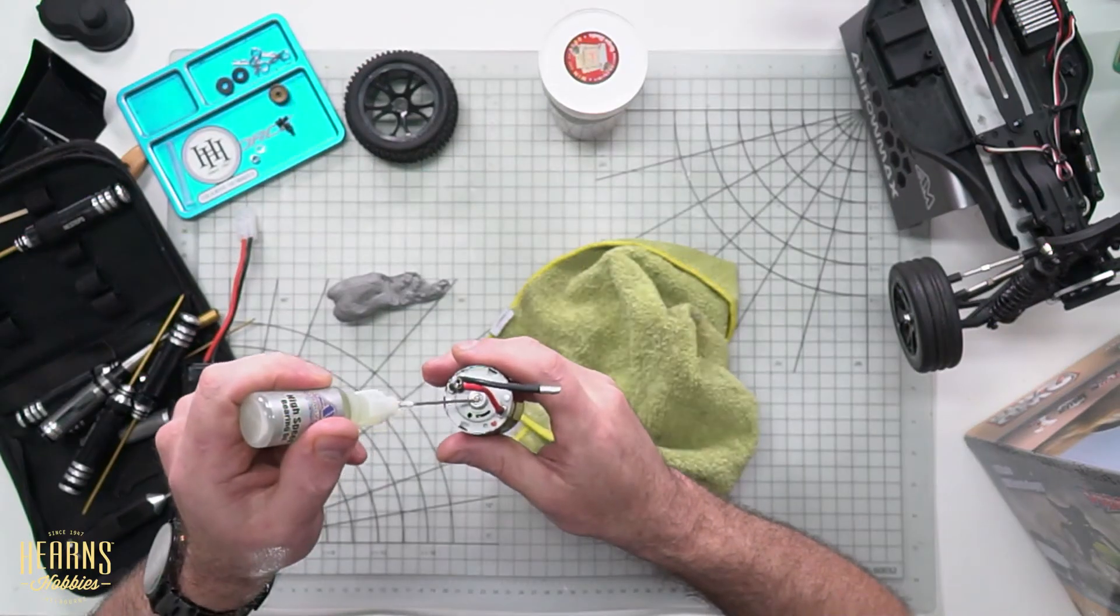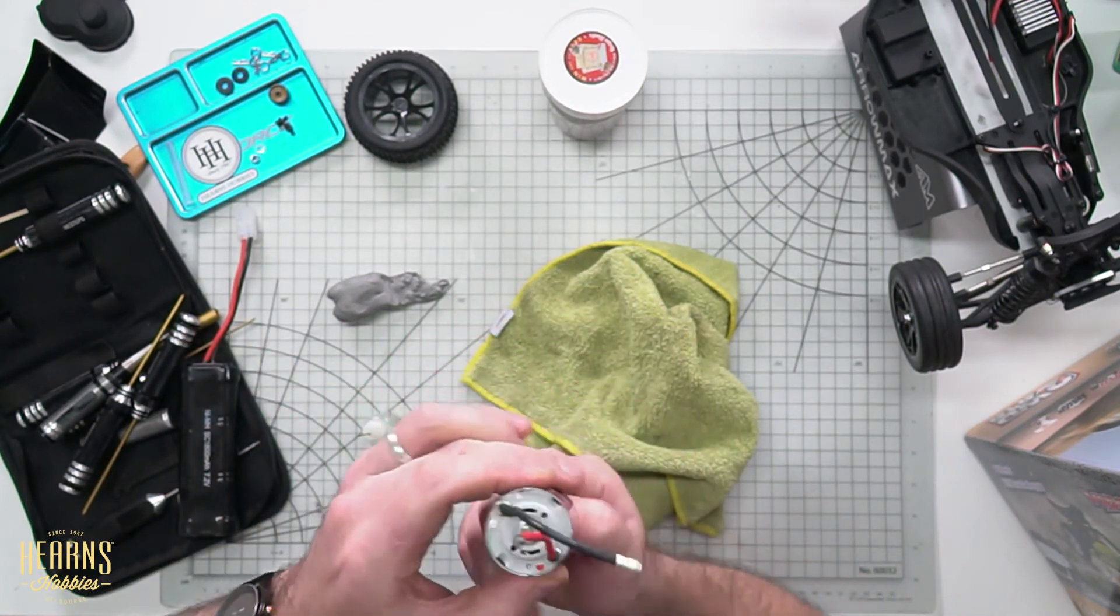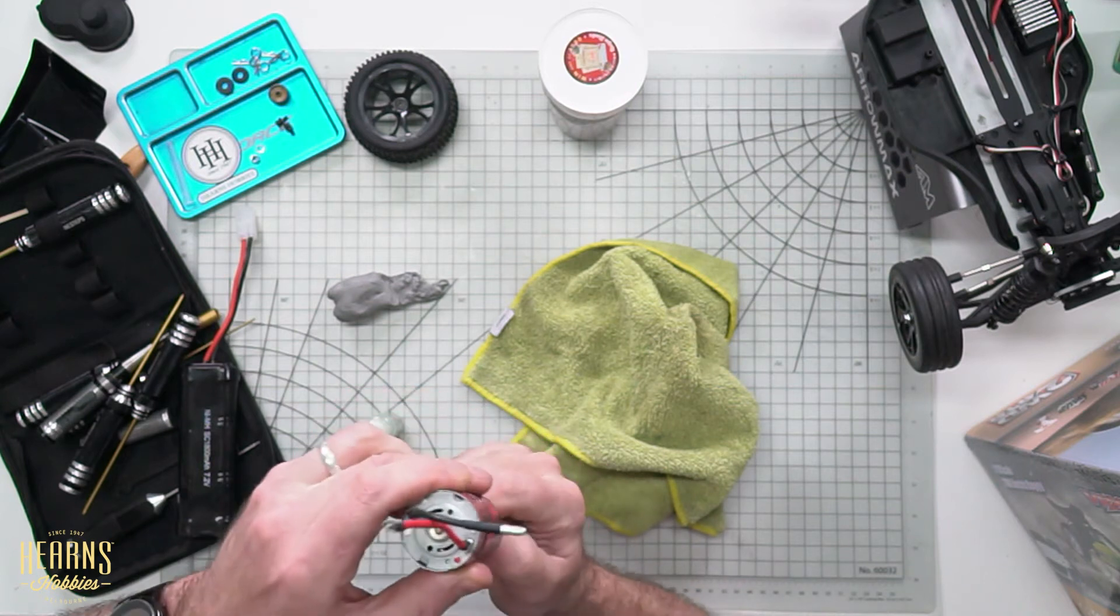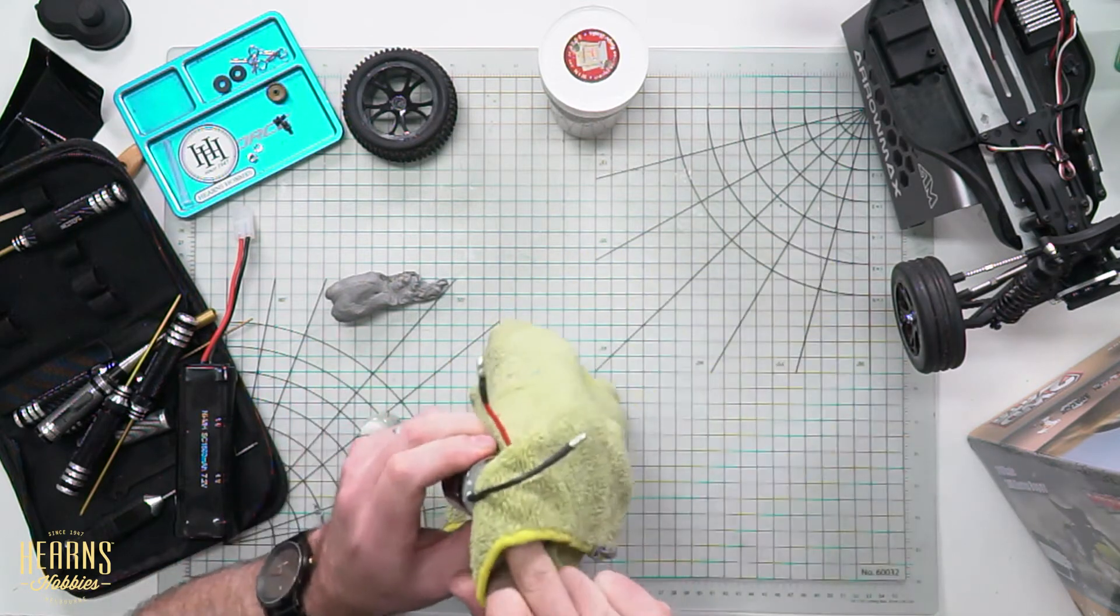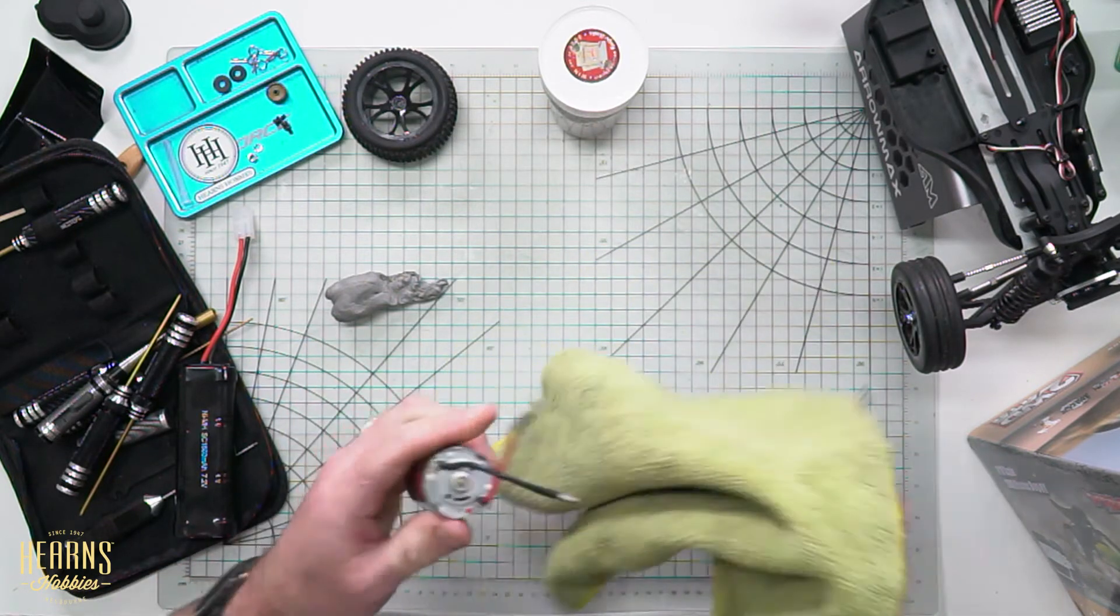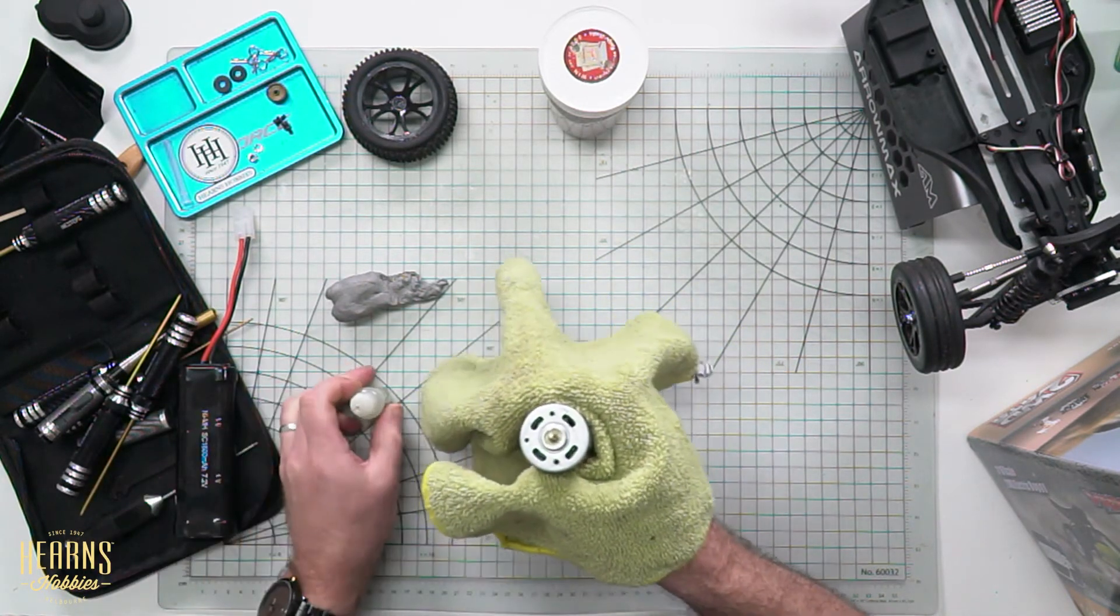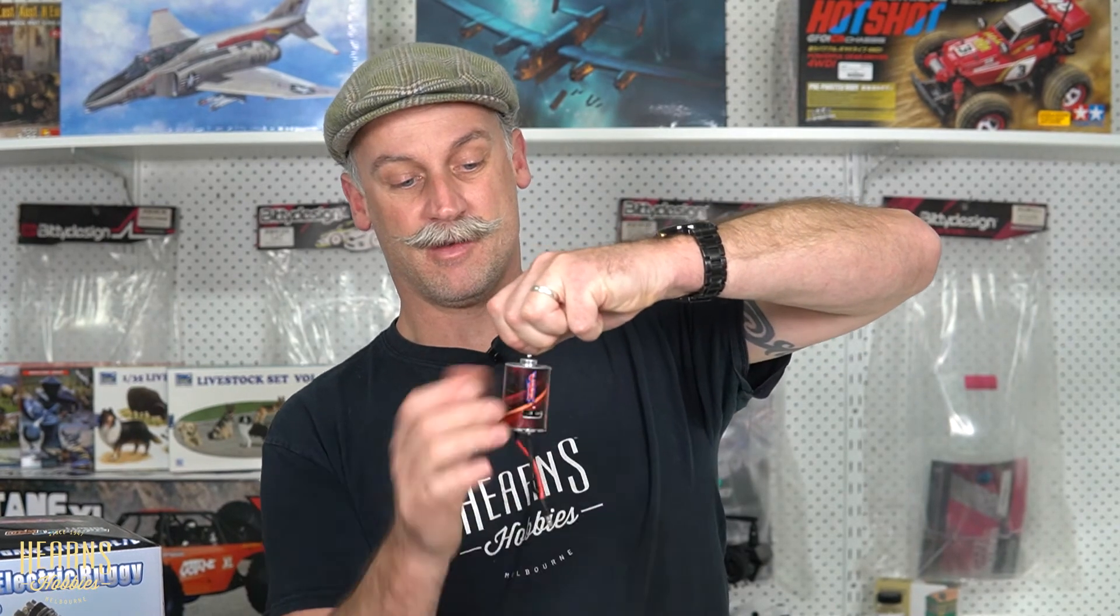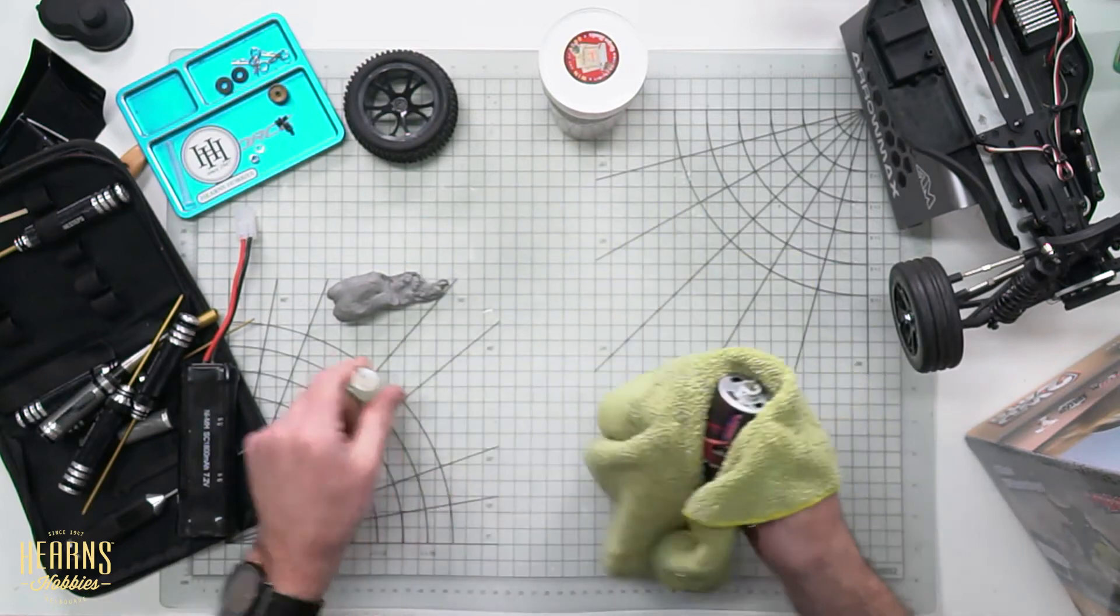I've got my motor oil here. I'm going to put a few drops on it and work that into the bush. As simple as that. Wipe off the excess and do the same at the front bearing. I'm going to work that oil in, like so, wipe off the excess.